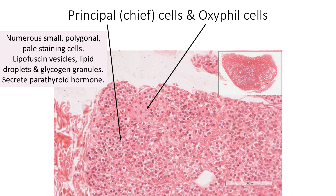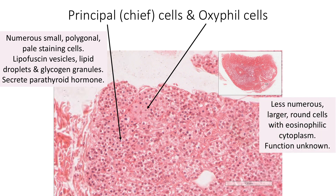These cells secrete parathyroid hormone which helps in calcium metabolism. Oxyphil cells, on the contrary, are less numerous but their number increases with age. They may be found singly or in clusters as seen here. They are larger cells, round in shape with distinctly eosinophilic cytoplasm due to abundant mitochondria. Their function is currently not very well known.